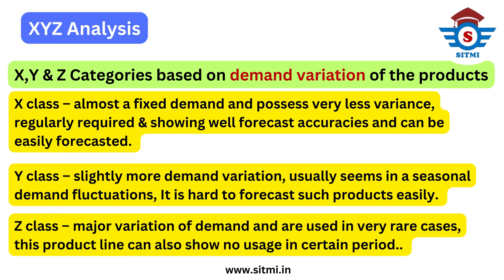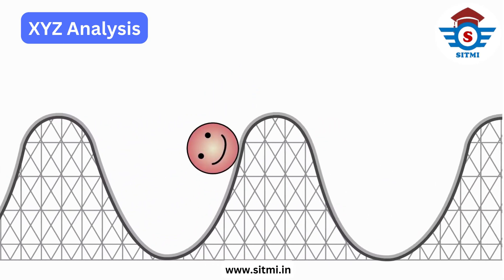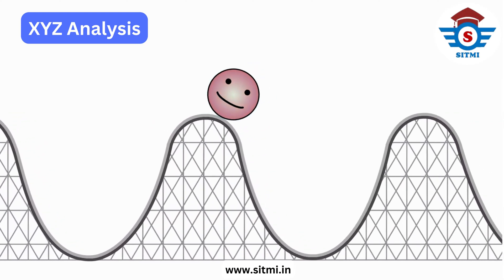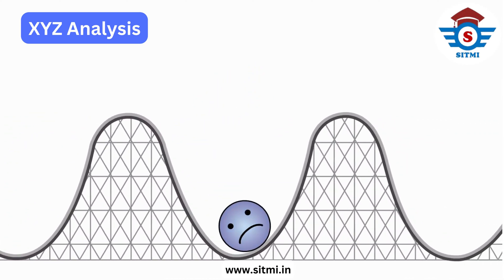Z class products are the products with major variation of demand and are used rarely in the business. These products may not be used for a long time or only in certain periods. So in summary: X class has stable demand, Y class has more variation compared to X class, and Z class has sporadic variation in the demand pattern.